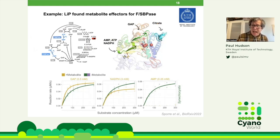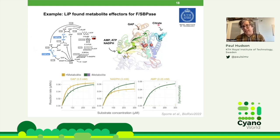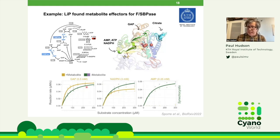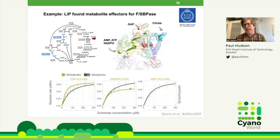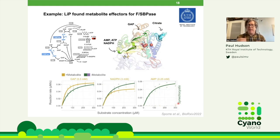The LiP data showed several metabolites interacting with FBPA, and I highlight the peptide that showed up in the mass spectrometer where these metabolites might be binding. AMP is a known inhibitor of the enzyme. ATP, NADPH, GAP (glyceraldehyde-3-phosphate, an intermediate of the Calvin cycle), and citrate — none of these were previously known to affect enzyme activity. We purified the enzyme and tested the actual effect through Michaelis-Menten kinetic plots. GAP stimulates the enzyme by lowering the KM. NADPH inhibits it — not a huge effect, but reproducible. AMP completely inhibits the enzyme at this concentration.